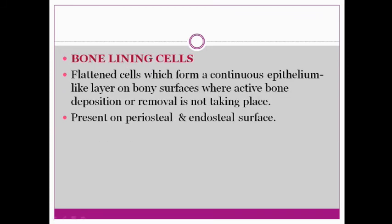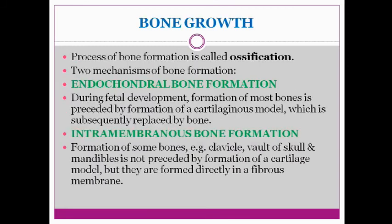There are also bone lining cells — flattened cells which form a continuous epithelium-like layer on the bony surfaces where active bone deposition or removal is not taking place. They are present on either the periosteal or endosteal surface. So three important cells: osteoblasts, osteocytes, and osteoclasts — along with the stem cell and your bone lining cell. We have now finished with the cells of the bone.